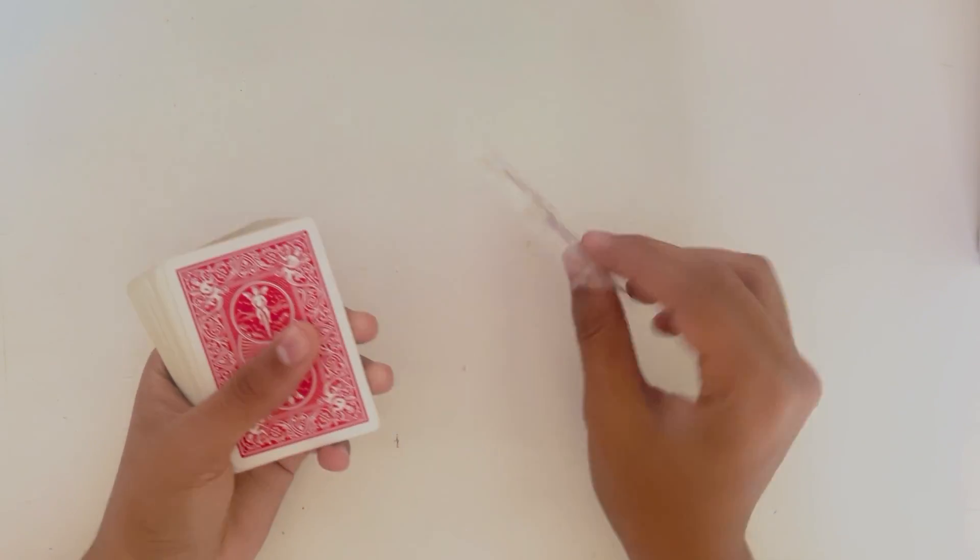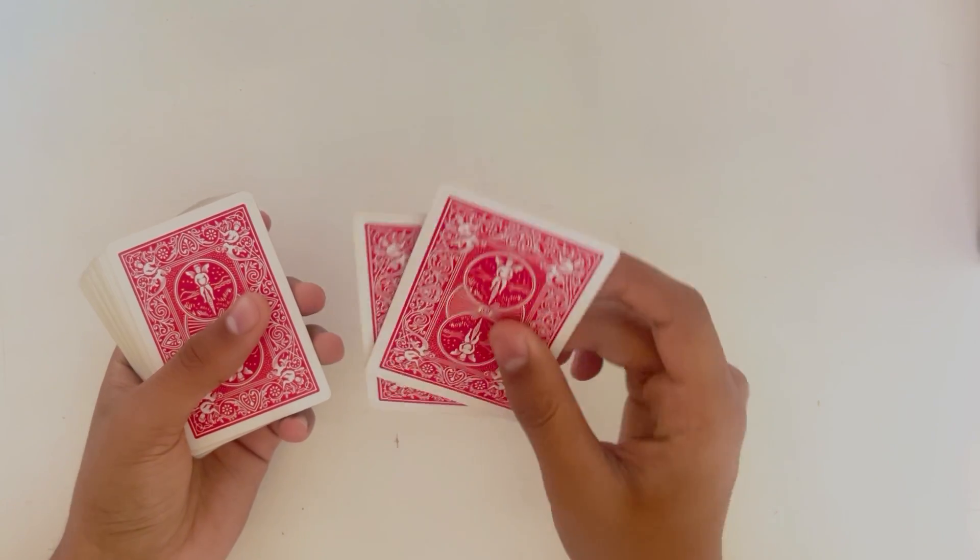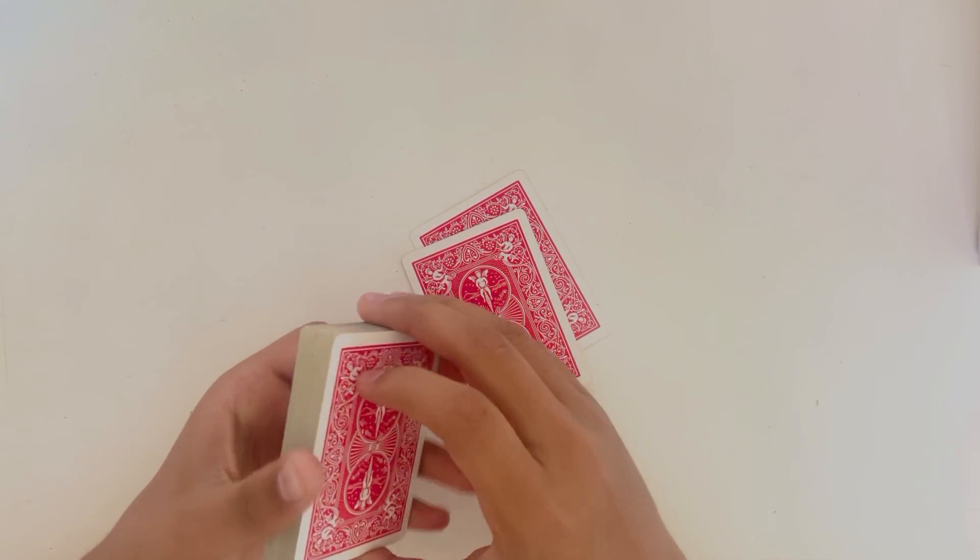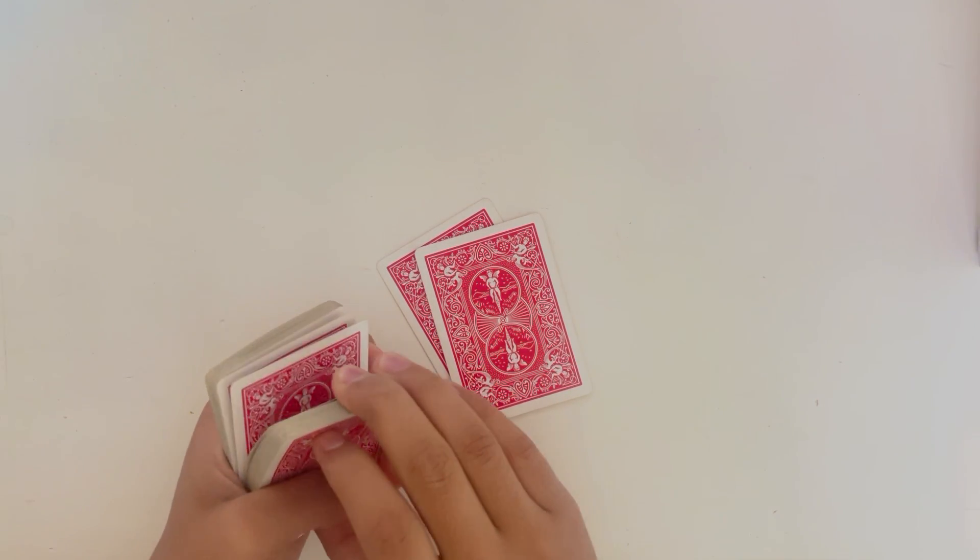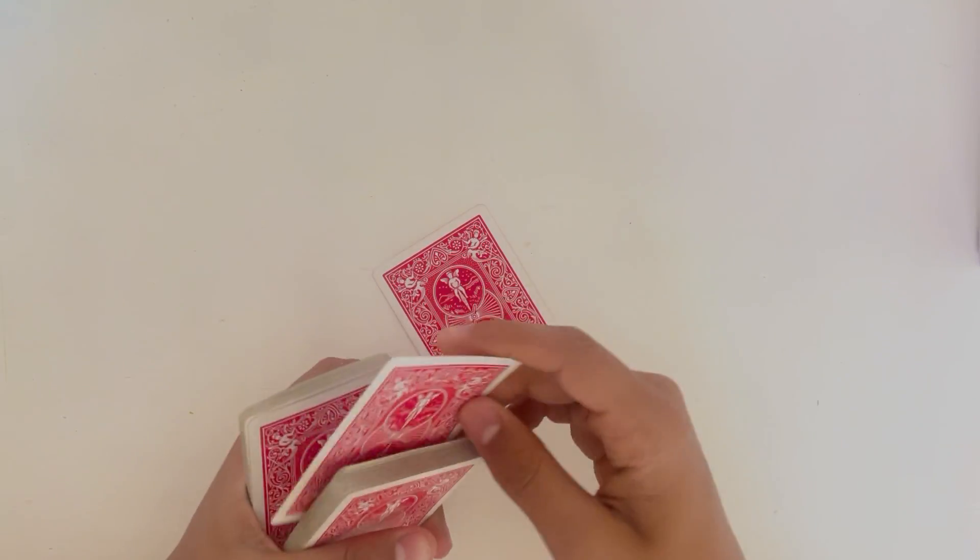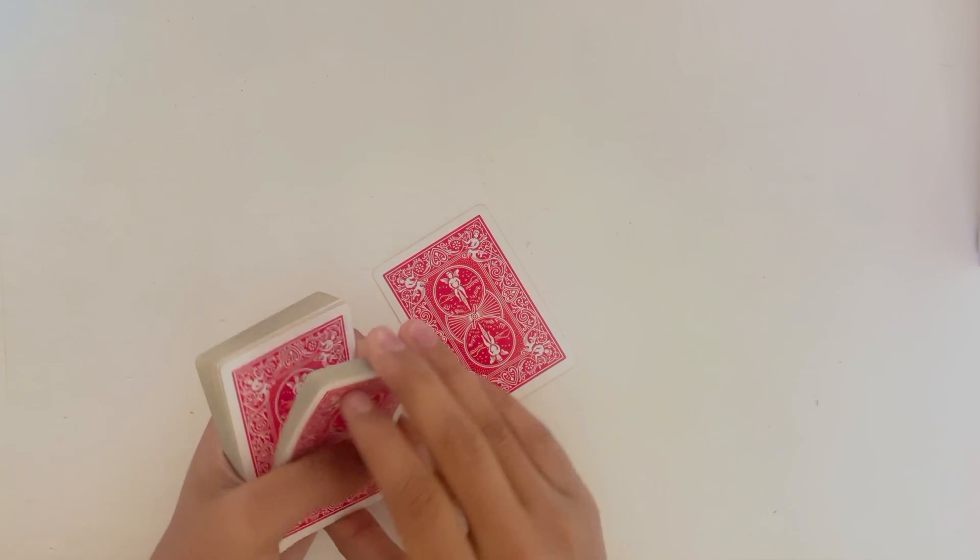For this trick, it involves a black six and a black nine which I've put at the top of the deck already. What you want to do with these cards is just lose them somewhere in the middle of the deck. So one of them can go right here and then I'll do it again, one of them can go right here.